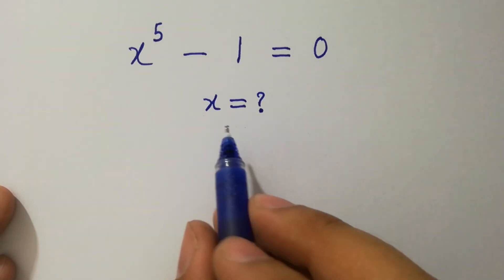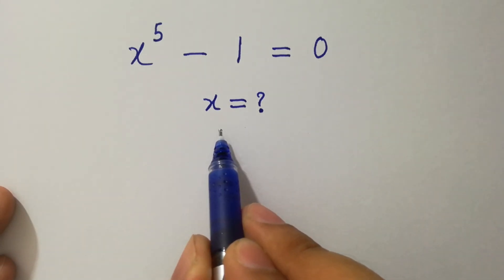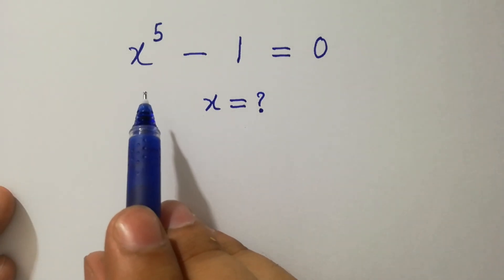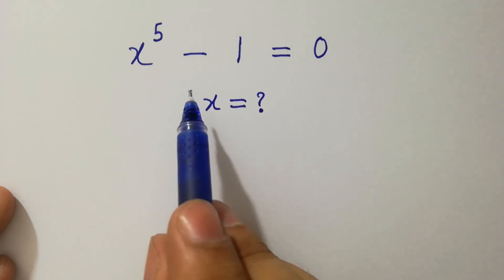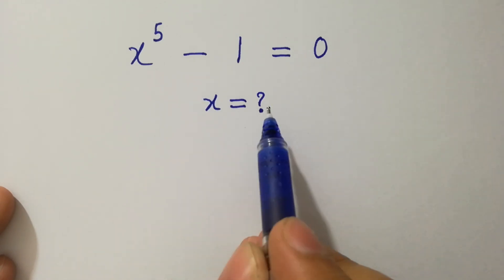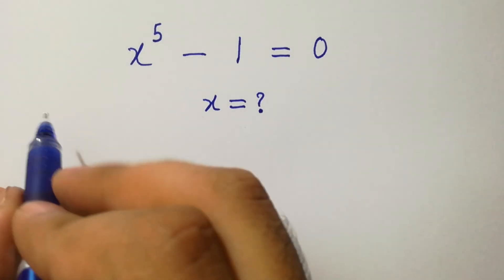Hello friends. Find the value of x if x to the power 5 minus 1 equals 0. Let's have a solution.